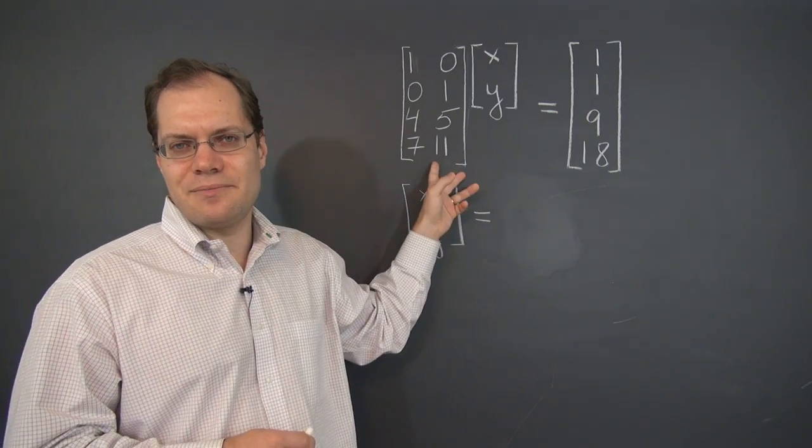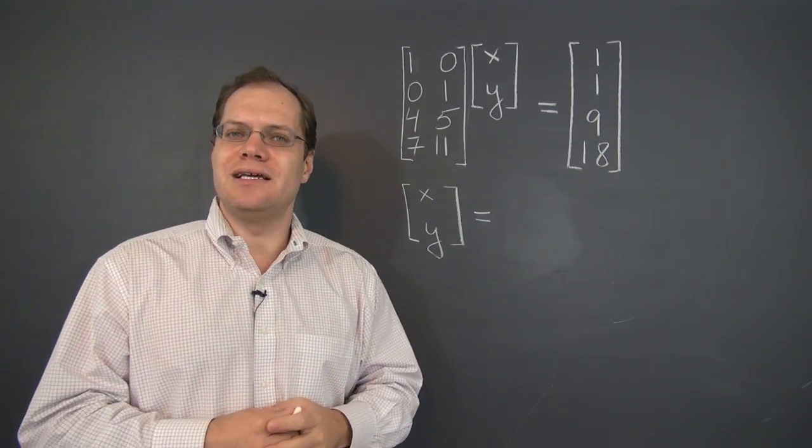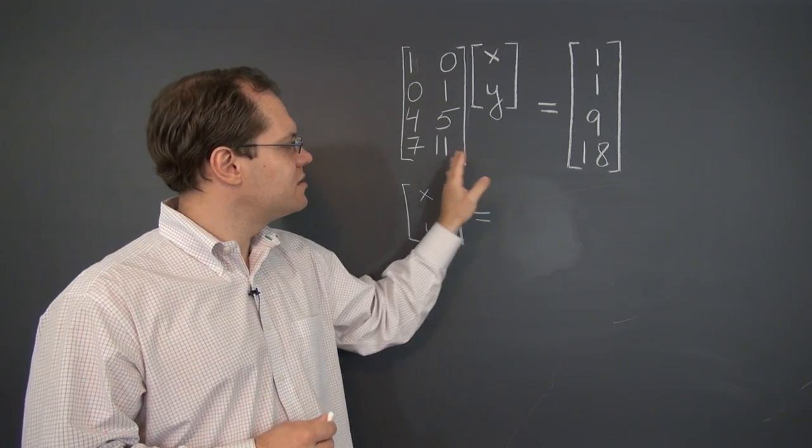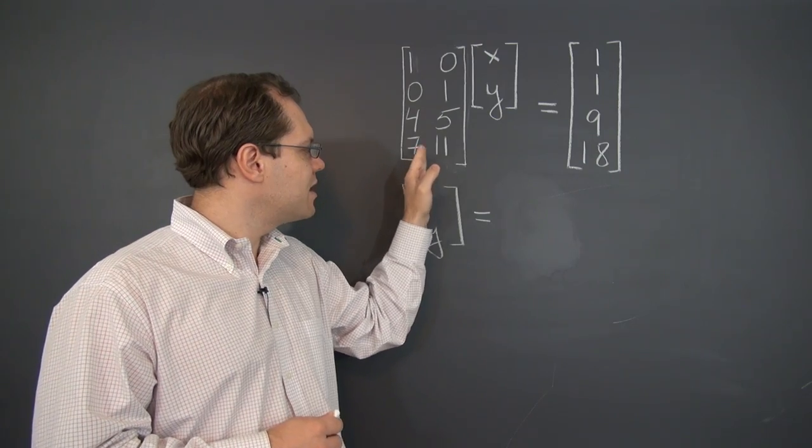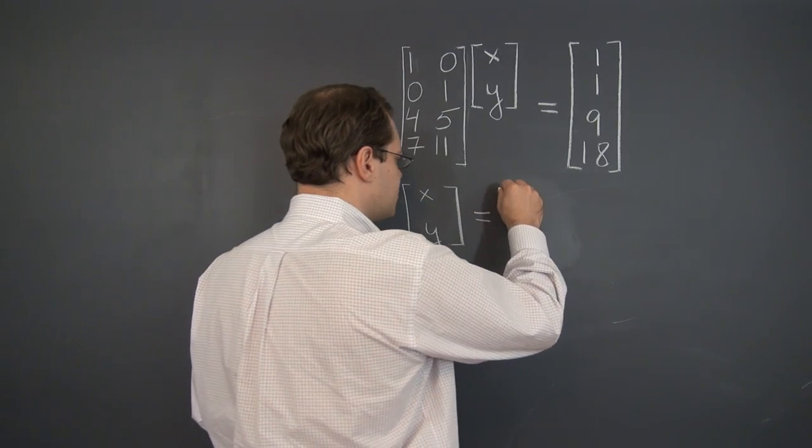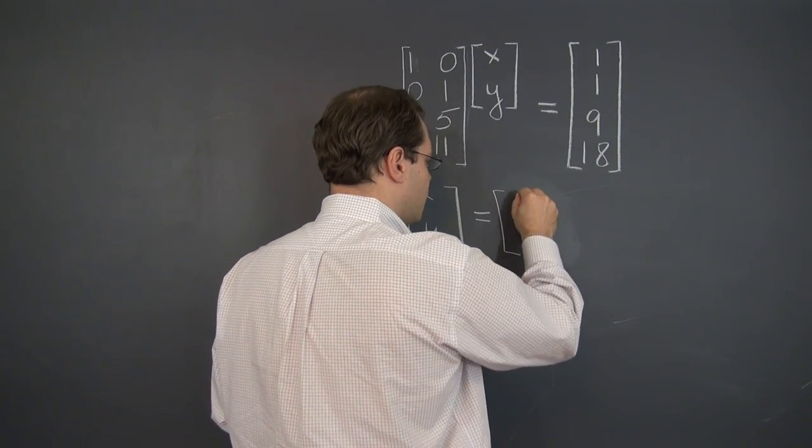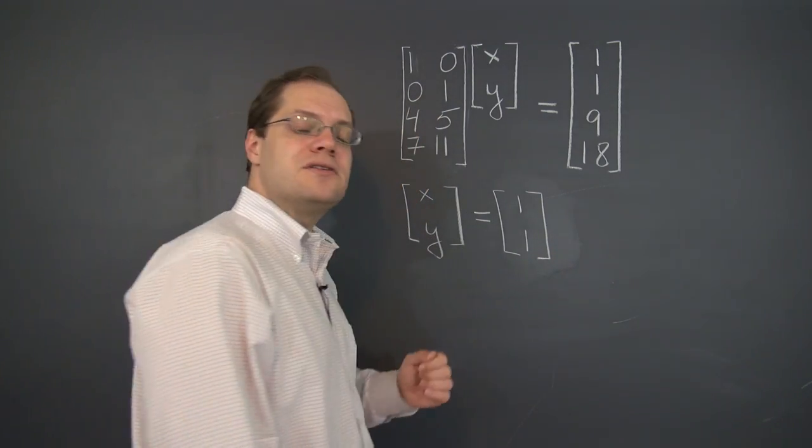So for a particular solution, do you see a way to obtain this column as a linear combination of the columns on the left? And I once again made it easy—this column is a straight sum of these two columns, so we need one of this column and one of this column to produce the right-hand side. So a particular solution is 1, 1.